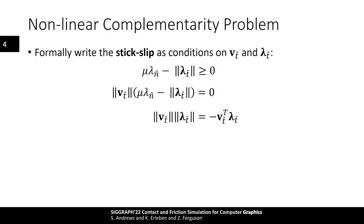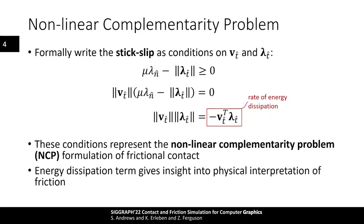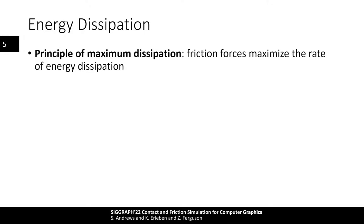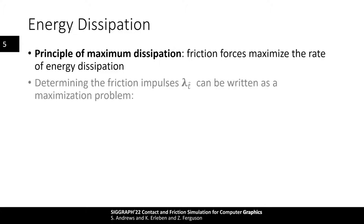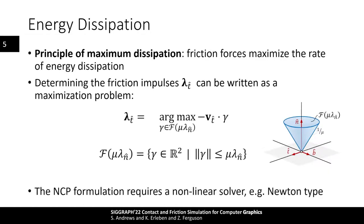There is similarity here to the complementarity conditions for non-interpenetration forces. Together, these conditions give the non-linear complementarity model of frictional contact. In the final condition, there is a term representing the rate of energy dissipation of the friction forces. This gives us insight into the non-linear model and how we might solve for friction forces. This brings us to the principle of maximum dissipation: friction must maximize the rate of energy dissipation. The problem of determining friction forces can therefore be written as a maximization problem, where the solution vector gamma is the friction force that maximizes energy dissipation while remaining inside the limit surface defined by the cone. However, a downside of this formulation is that a non-linear solver — such as a Newton-type method — is needed, which can be expensive.